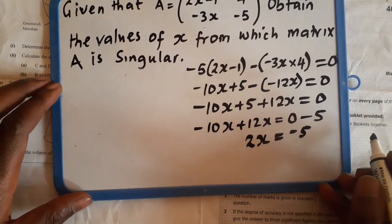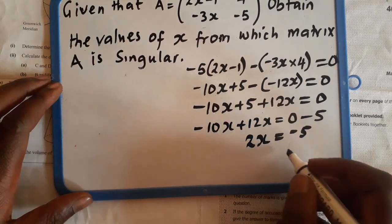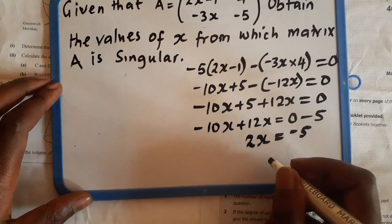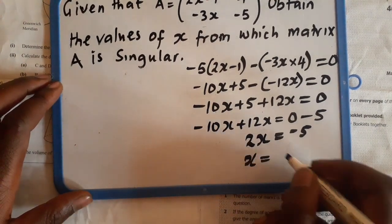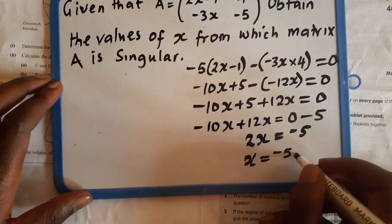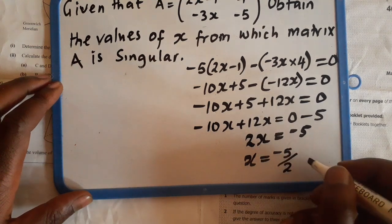2X equals negative 5. So when we solve for X, we have to divide both sides by 2. So X equals negative 5 over 2.